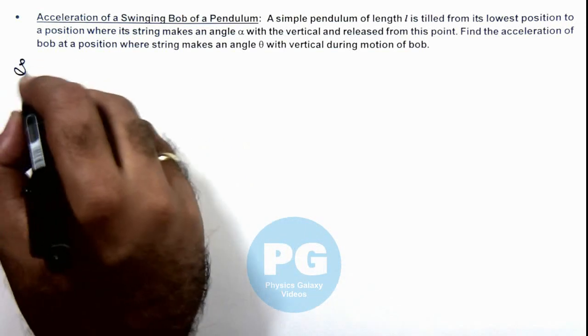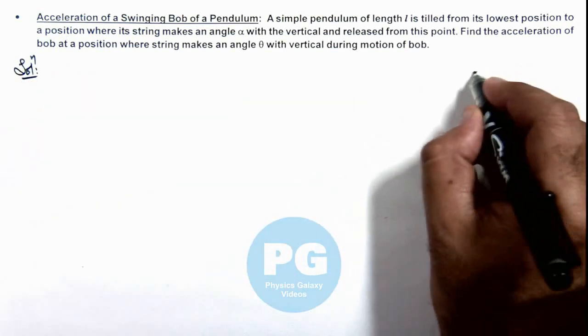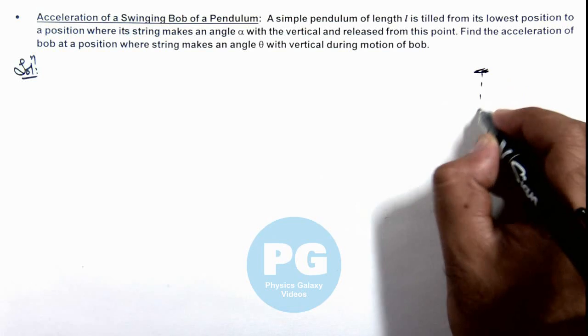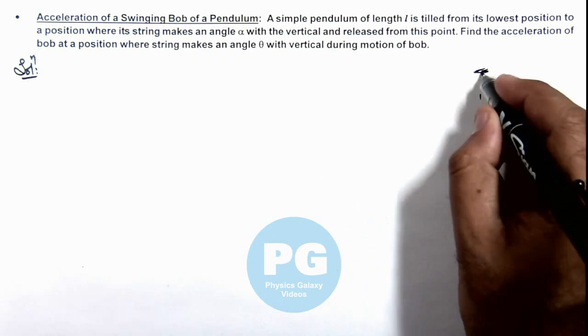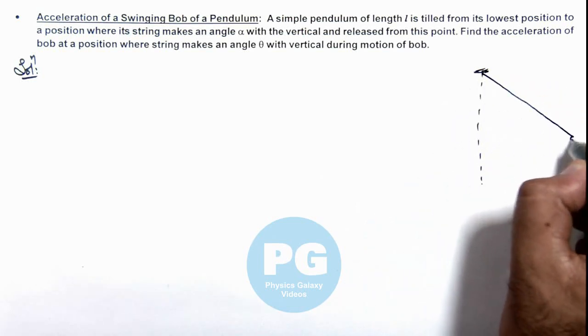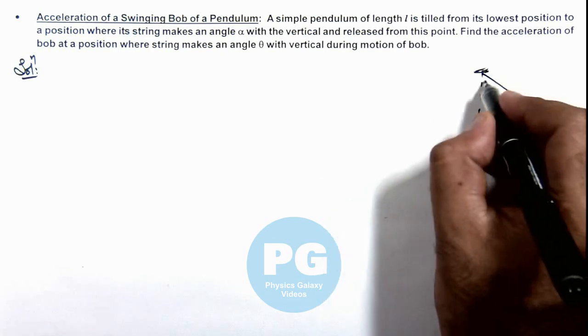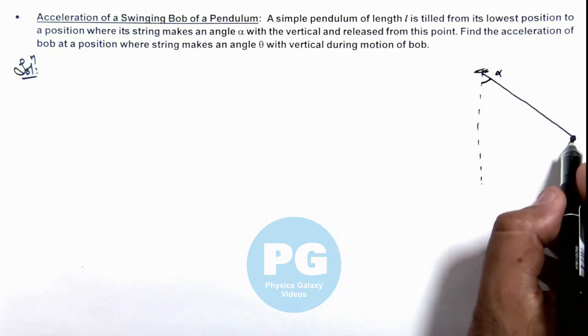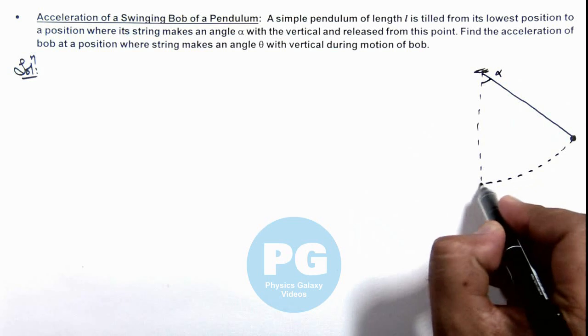Let's first draw the picture to analyze it. Here, from the initial position of this bob, it is taken to a position where its string makes an angle alpha. Now if it is released, it'll start moving in a circular path.